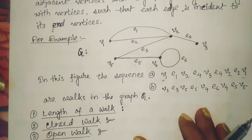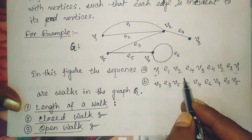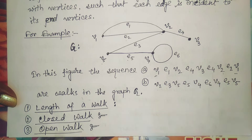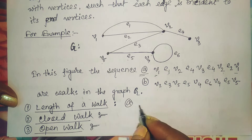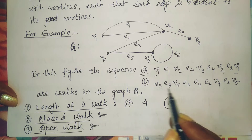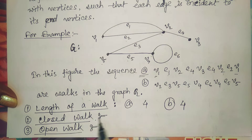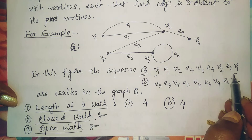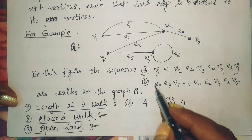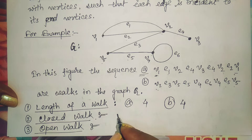The length of a walk is the number of edges included in that walk. For the first walk, the length is 4; for walk B, the length is also 4. A closed walk is one that starts and ends at the same vertex, for example starting and ending at v1. An open walk starts and ends at different vertices.